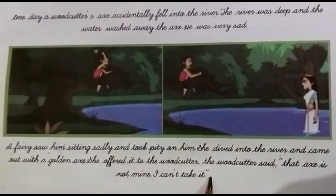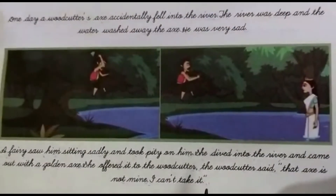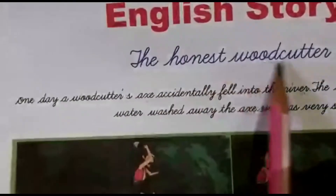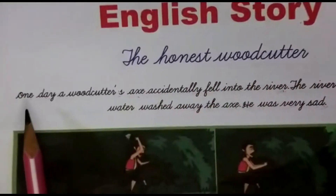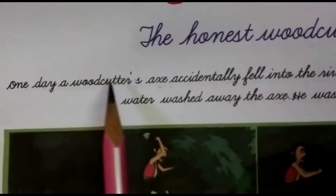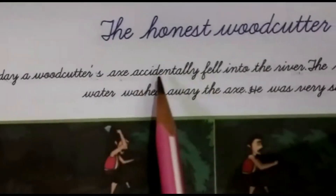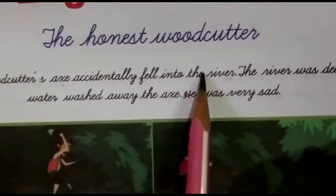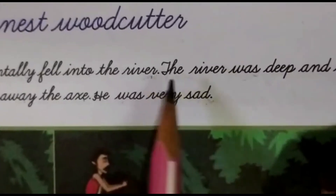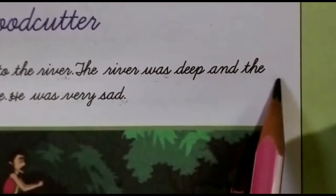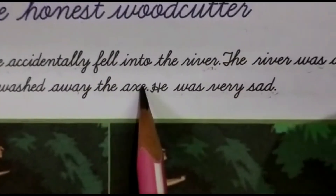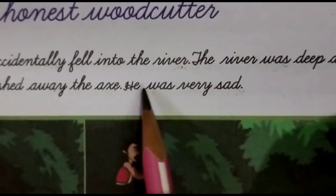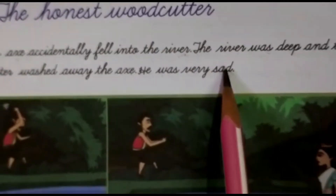Okay children, I will read once more — the first and second paragraphs of The Honest Woodcutter. One day a woodcutter's axe accidentally fell into the river. The river was deep and the water washed away the axe. He was very sad.